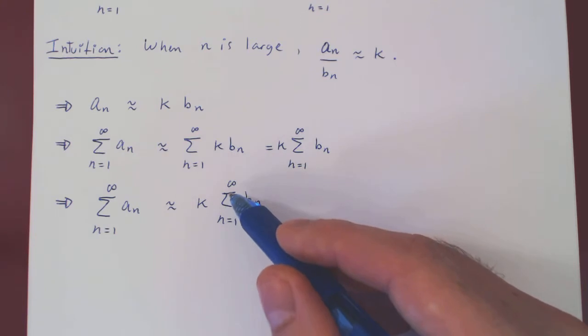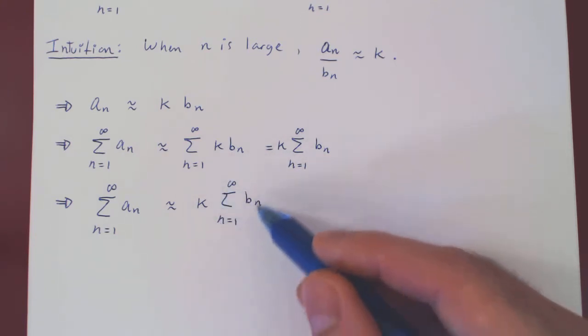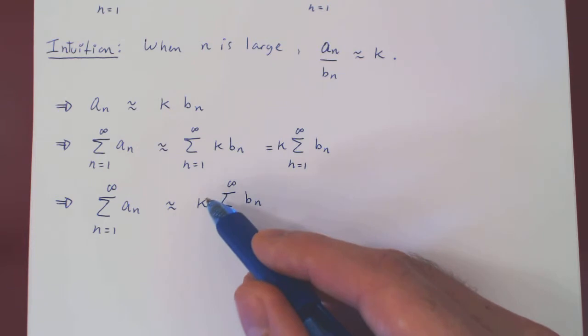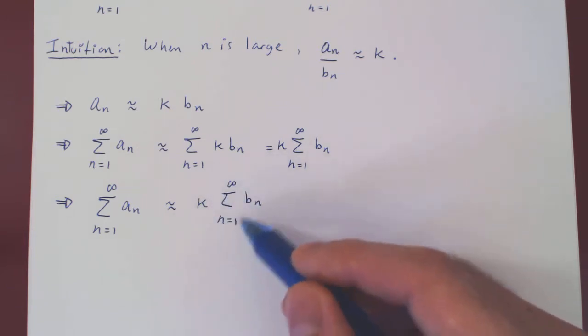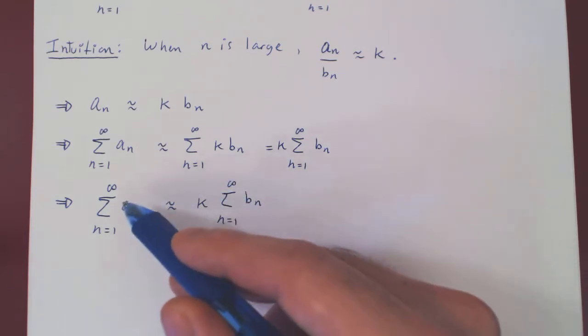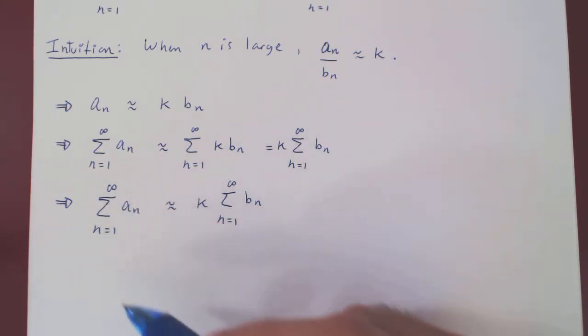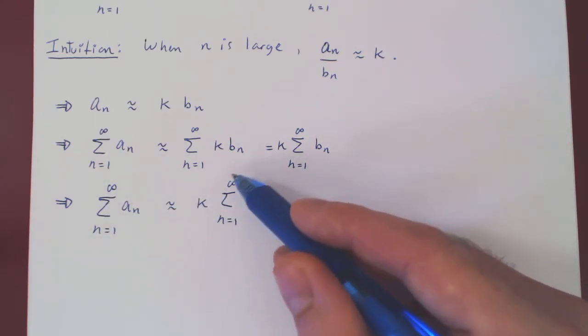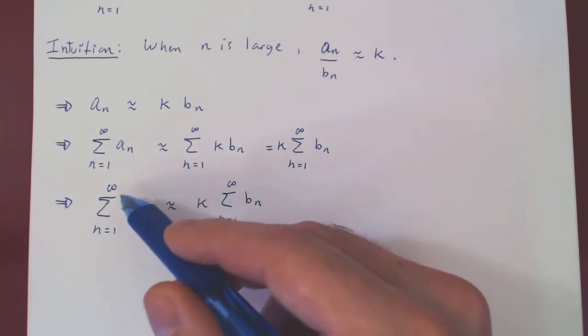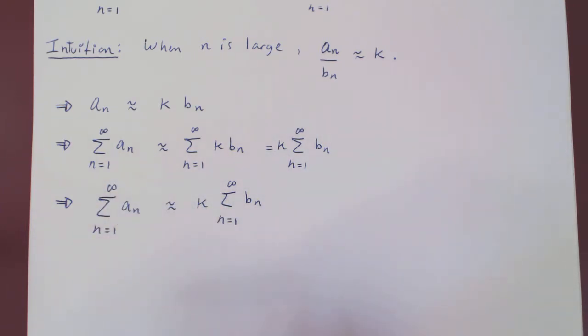So let's suppose now that this series is finite. Well, then k is a real number times a finite number is just another real number. So the series of an is roughly a real number, therefore, converges as well. And so you see, if the series of bn converges, the series of an also converges.